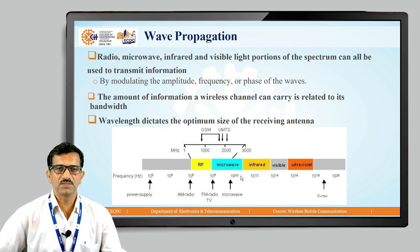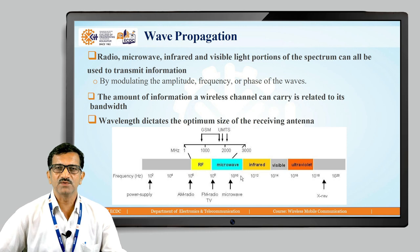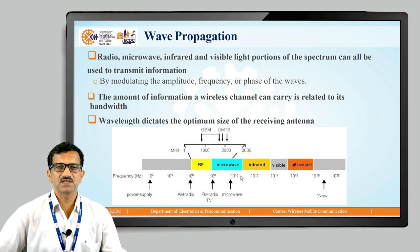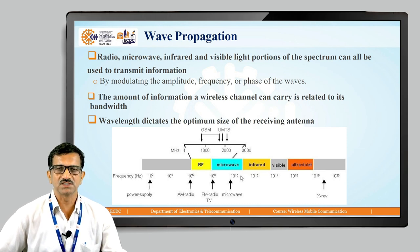It depends on the bandwidth basically — how much information is being transmitted from one place to another. Wavelength dictates the optimum size of the receiving antenna. The size of the antenna depends on the frequency, and as the frequency increases, the size of the antenna decreases.